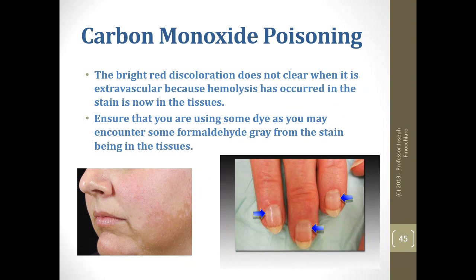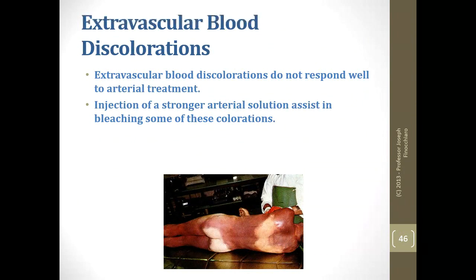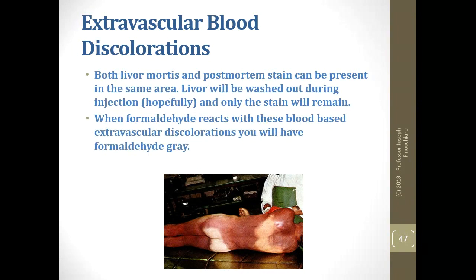Counter-stain the tissue — put in extra dye so that when formaldehyde starts to preserve it, it offsets the gray. Extravascular discolorations do not respond well to injection of a stronger arterial solution; the system bleaches some colorations. If you have an extravascular blood discoloration, one of your choices is counter-staining. You can have both livor mortis and post-mortem stain: the livor will wash out and lighten some, but the post-mortem stain will remain, and when it reacts with formaldehyde it will become formaldehyde gray.